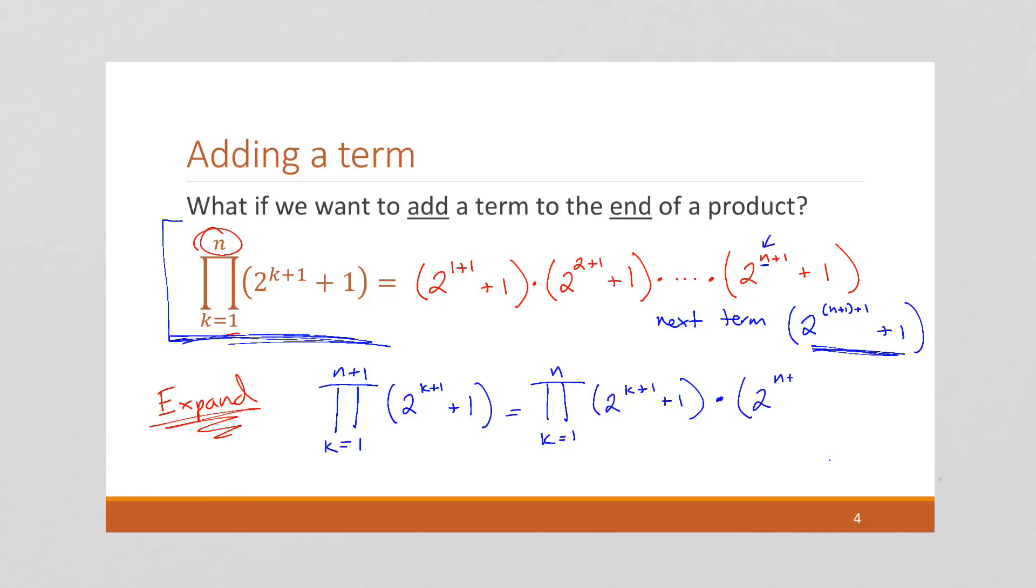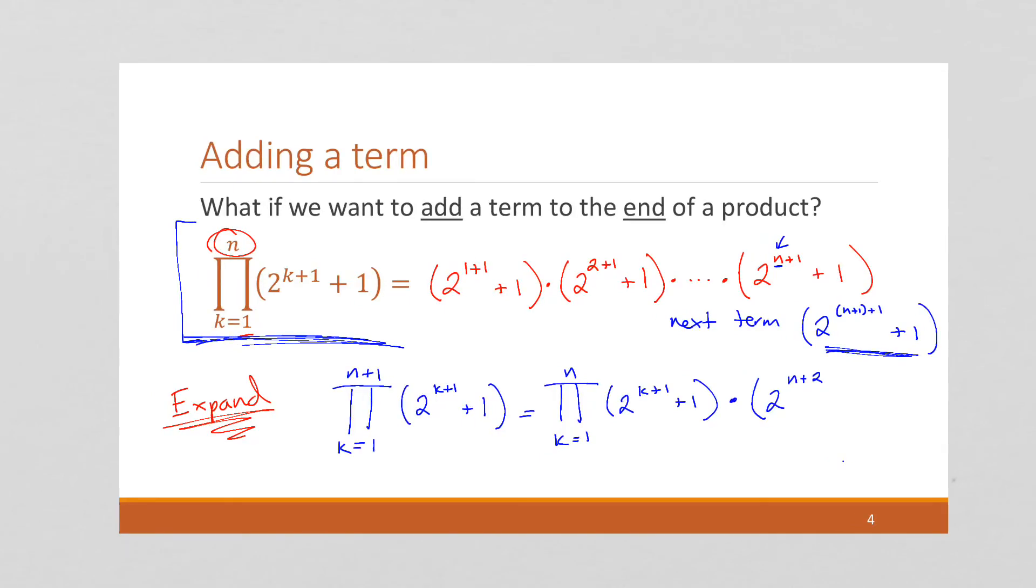So let's rewrite our statement in the full expanded version. We're going to start at 1, but now we're going to go to n plus 1 of 2 to the k plus 1 is going to equal this old product that we started with times this new term. We can simplify that and call it 2 to the n plus 2. So this is how we would add a term, this is the new term, to the end of a product.